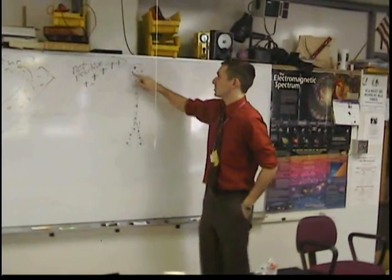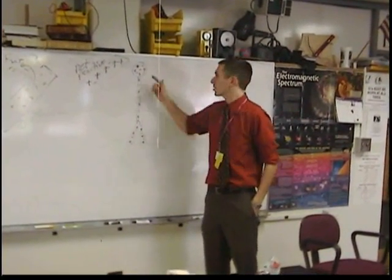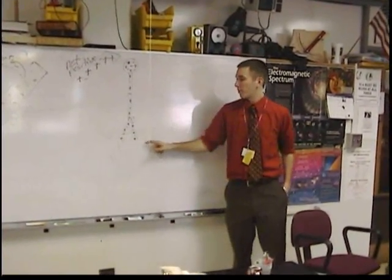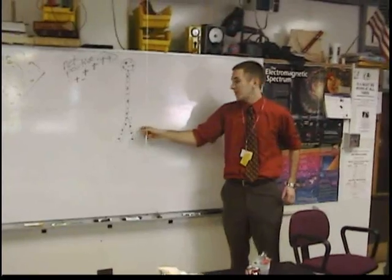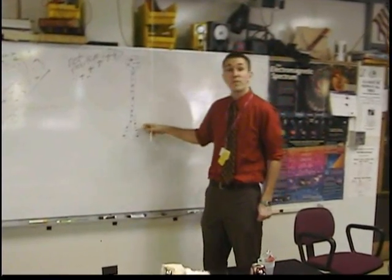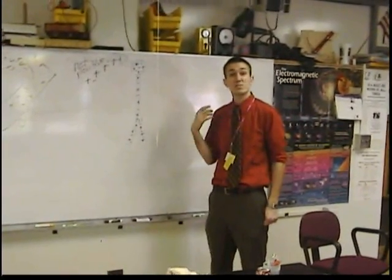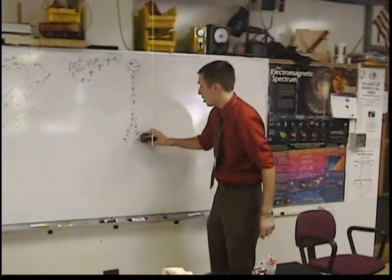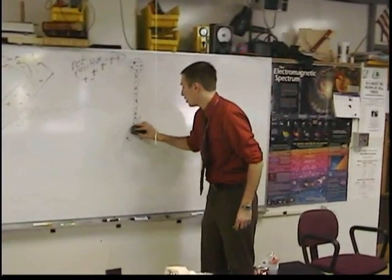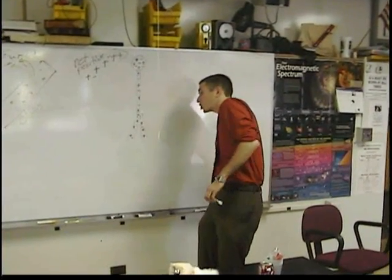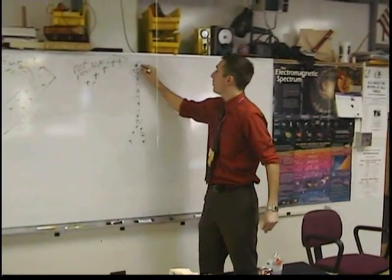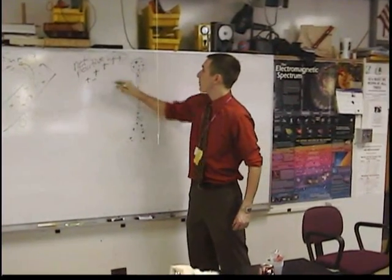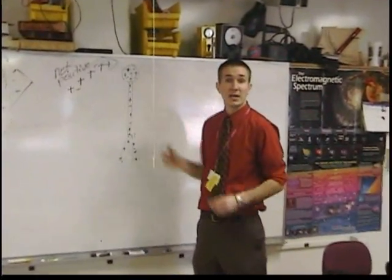But what can happen, the negatives can move. Positives attract negatives. These negatives down here at the bottom are really far away. They want to get as close as possible up to those positives. So these negatives are going to go rushing up the electroscope. So these positives attracted the negatives.